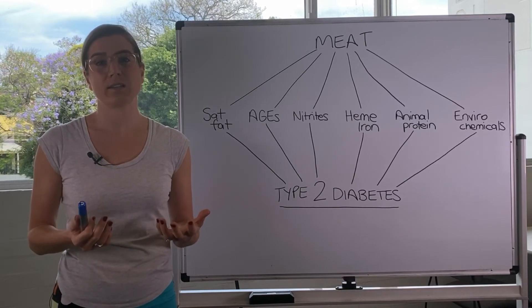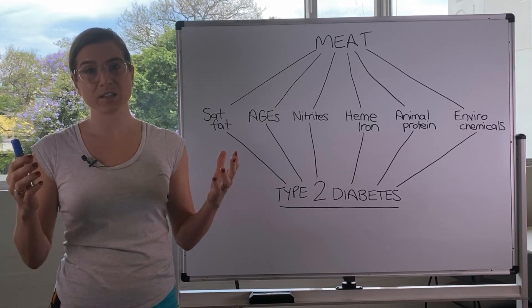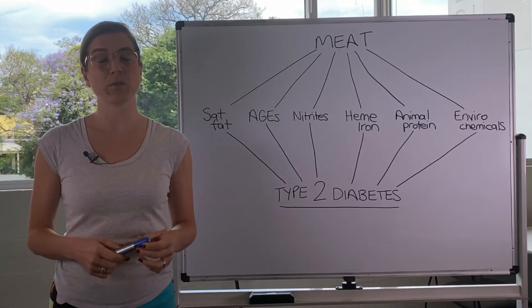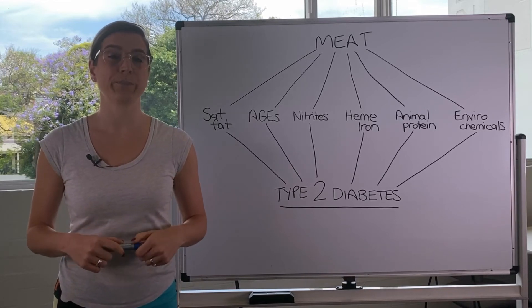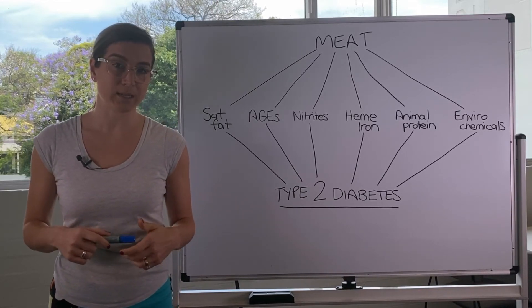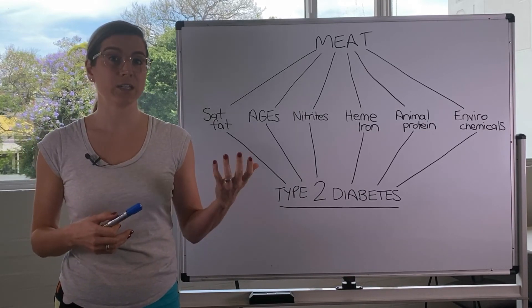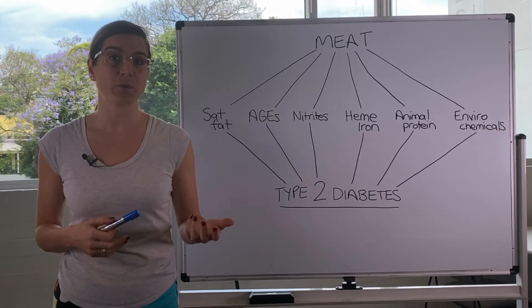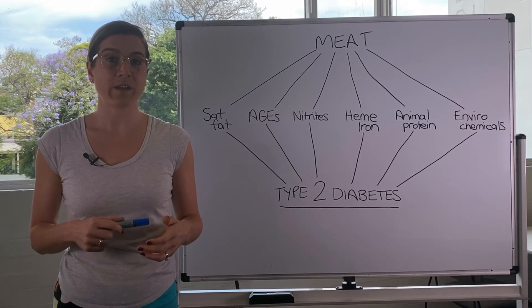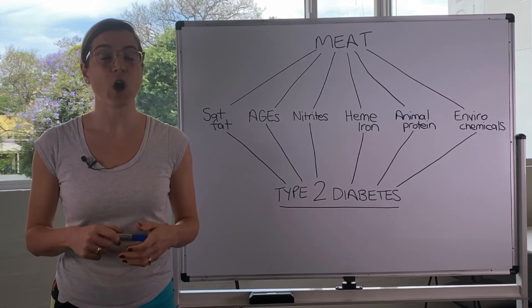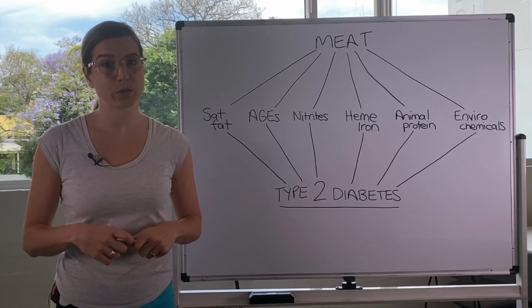And our endocrine system is the system of hormones in our body. And remember, insulin is a hormone. So these chemicals can disrupt our hormones, including insulin, which can then lead to insulin resistance and type 2 diabetes. And it's found that meat eaters have the highest levels of these industrial chemicals.